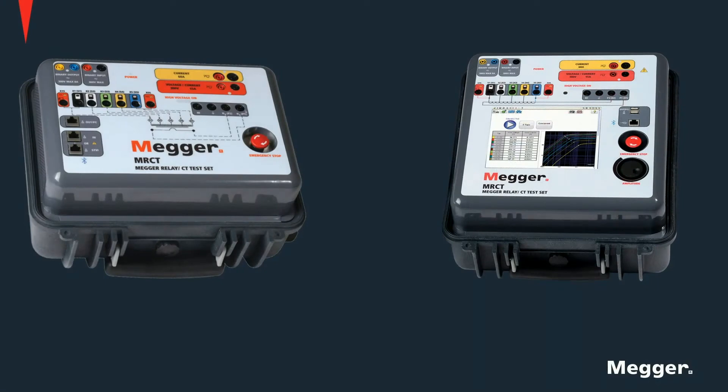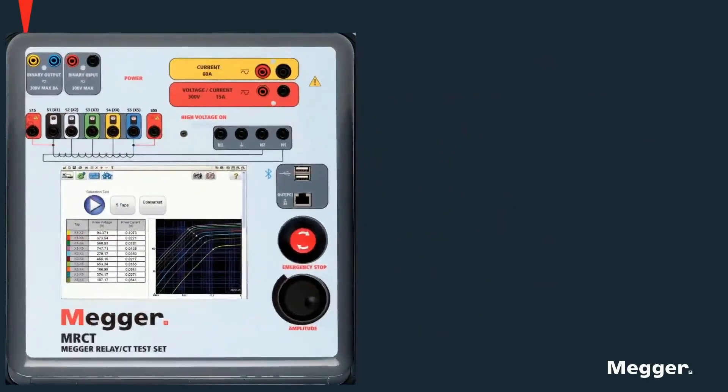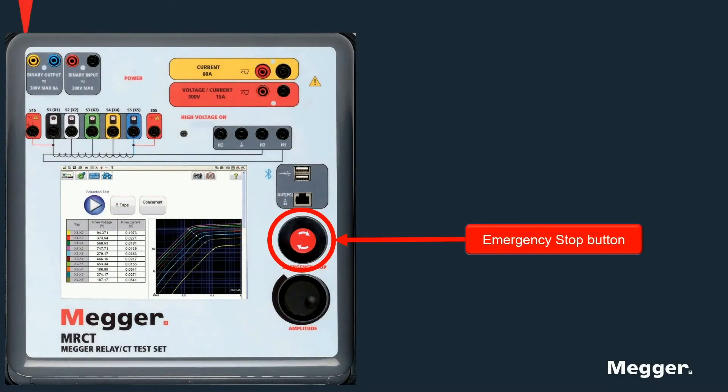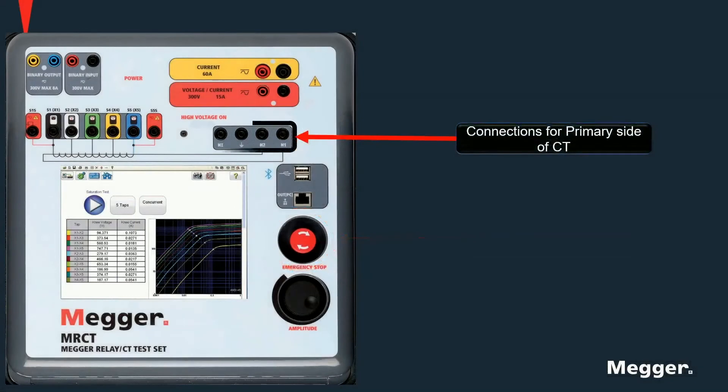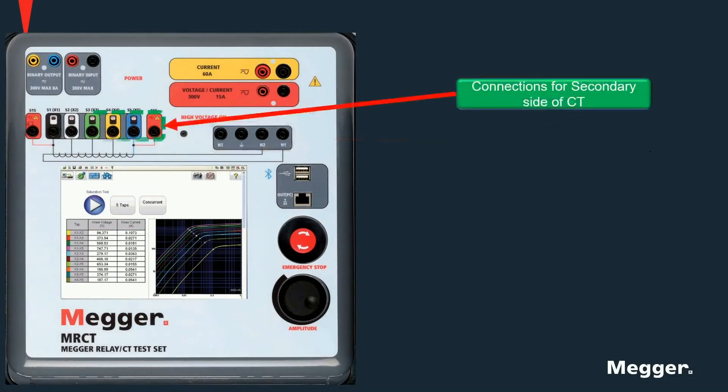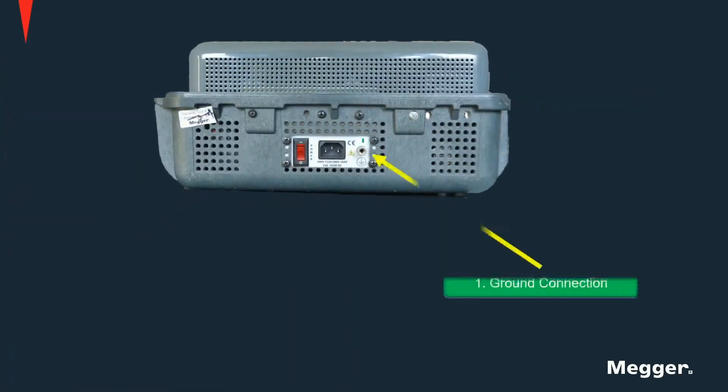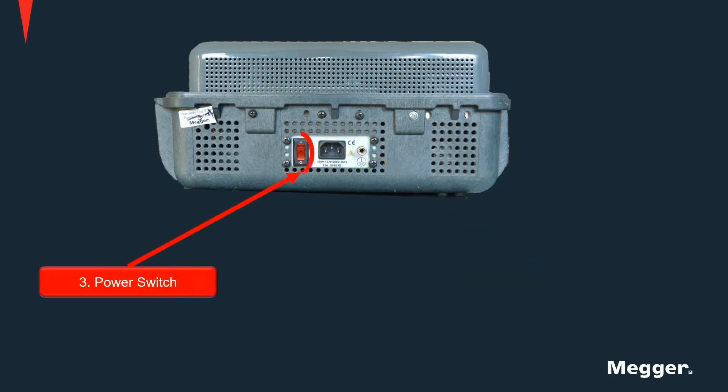There are two versions of the MRCT units which are shown here: units without a screen and units with an embedded screen. Each unit has an emergency stop button which should only be used to stop the unit in case of emergency and not as part of regular operation. High and low voltage outputs for CT testing are also provided. They all have a ground connection, a power connection, and a power switch.